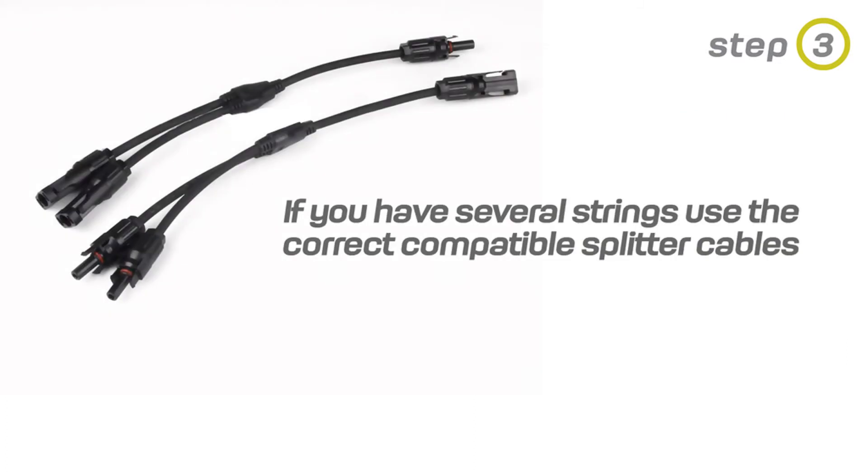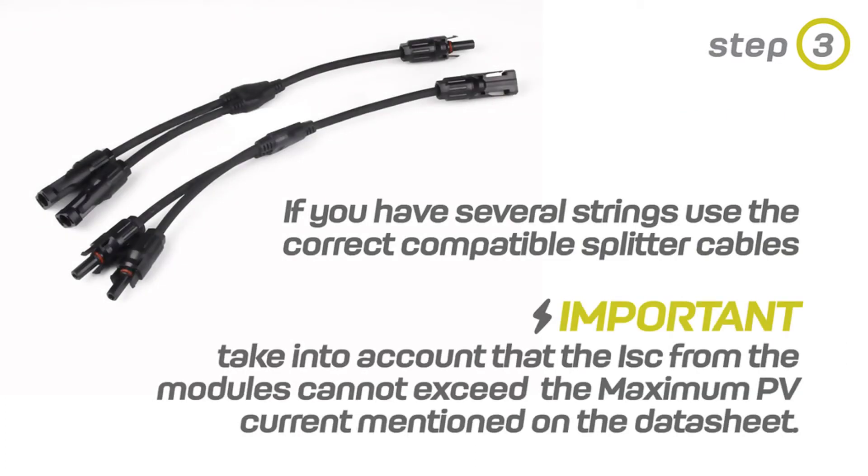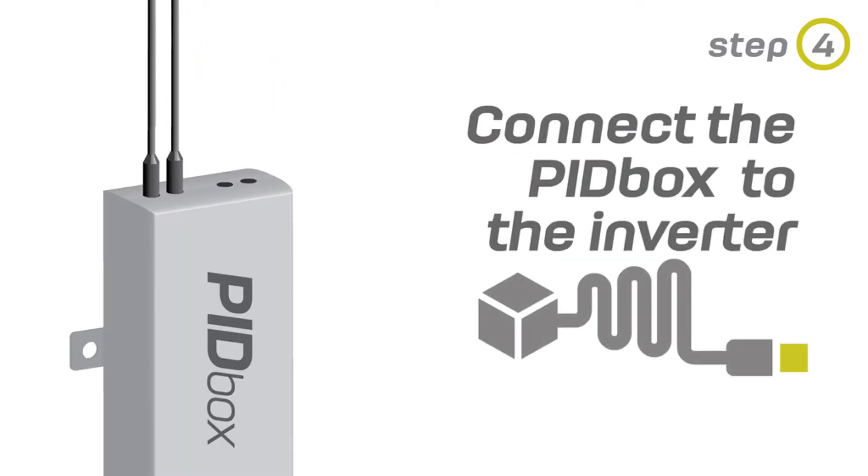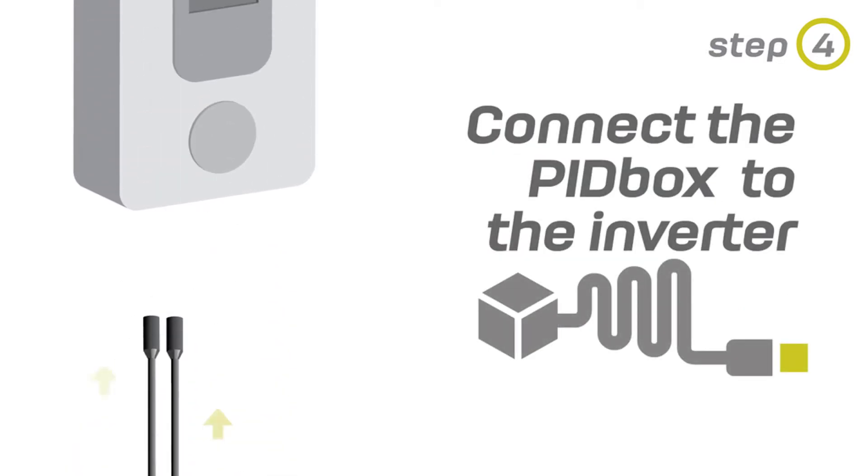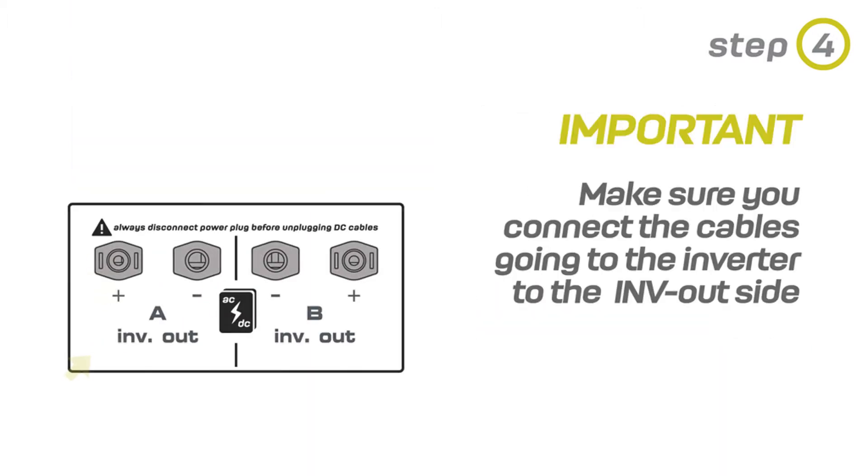If you have several strings, use the correct compatible splitter cables. Connect the PID Box Mini via the connectors to the inverter. Make sure you connect the cables going to the inverter to the INV outside of the PID Box Mini.